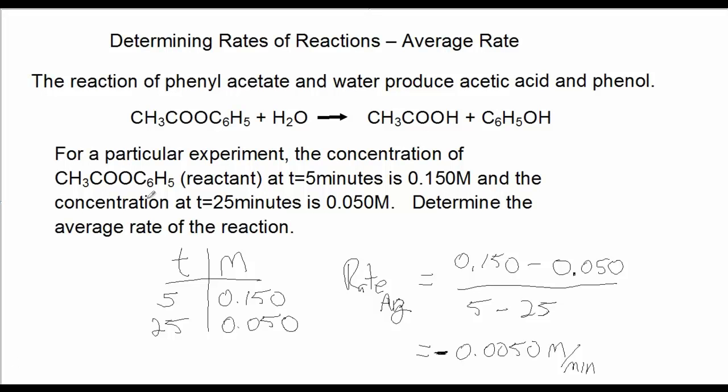Well, I approach the problem by setting up a table with time and molarity. At 5 minutes corresponding molarity is 0.15. Now, 25 minutes corresponding molarity is 0.05. If I set up my equation as such, 0.15 minus 0.05 and 5 minus 25, making sure I have the concentration corresponding with the particular time. And this is going to be negative. It makes sense because we're decreasing our concentration of reactant. So, negative 0.0050 molar per minute.